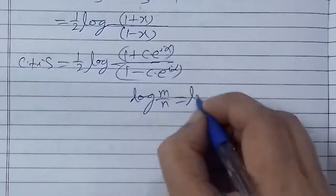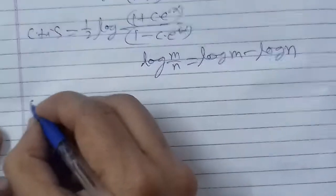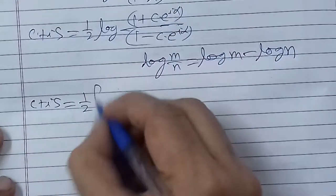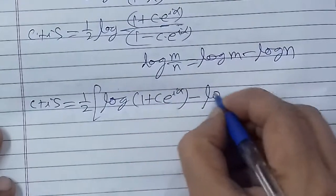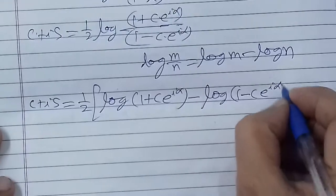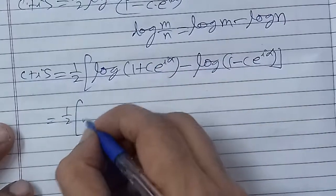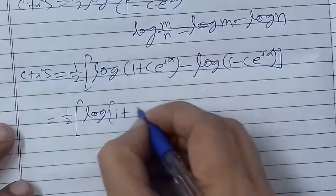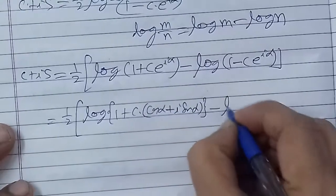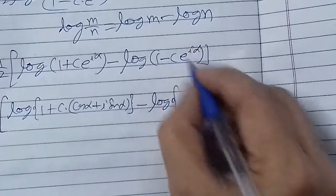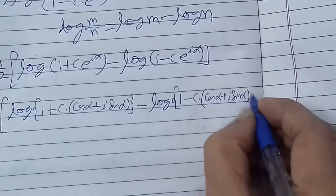Now we apply the log(m/n) identity: log(m/n) = log m − log n. So C + iS = (1/2)[log(1 + Ce^(iα)) − log(1 − Ce^(iα))]. Now applying Euler's formula again: e^(iα) = cos α + i sin α. So we substitute this into both log terms: 1 + C(cos α + i sin α) and 1 − C(cos α + i sin α).